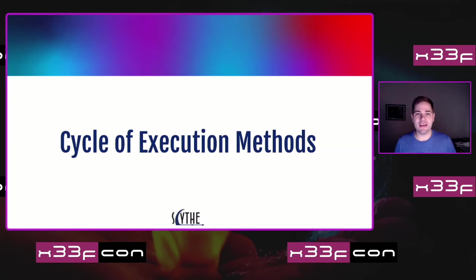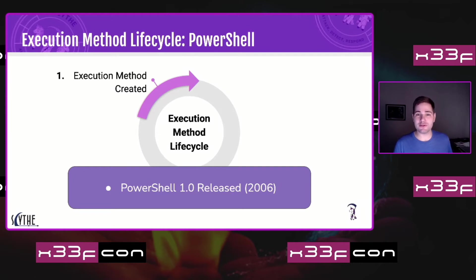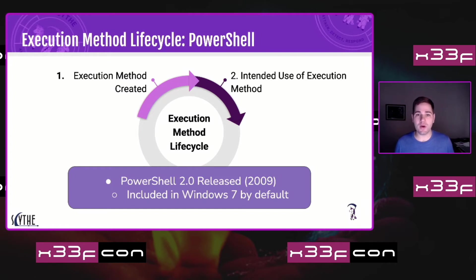The cycle of execution methods — I picked PowerShell as my main example because it's well documented and a lot of people in this space know its history. When we talk about a lifecycle, let's look at how something becomes an execution method. PowerShell version 1 was released in 2006, but something to remember: just because something's released doesn't mean it's widely used. It still had to be downloaded and installed. PowerShell version 2, released three years later, was included in Windows 7 by default — and default installs dramatically increase your user base and intended use by system administrators.